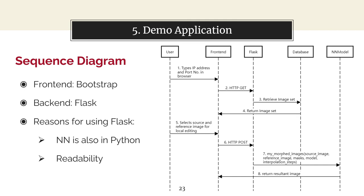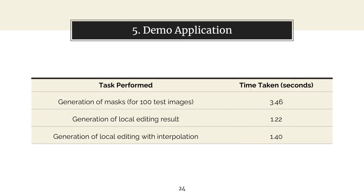This is the sequence diagram of the demo application. Flask is used as the backend. The reason for choosing Flask is that the neural network is also in Python, hence providing better connectivity. Flask also allows squeezing both the frontend and backend into one single file, providing better readability. The time taken for tasks in the demo application has also been measured, and the table shows that all tasks are performed in reasonable time.